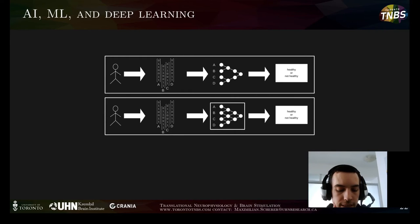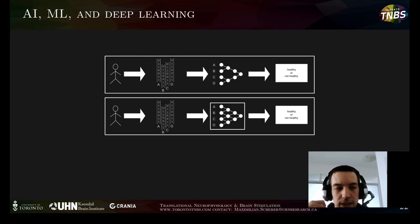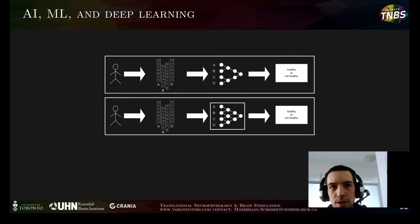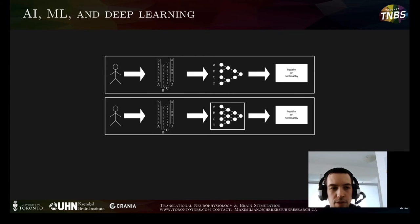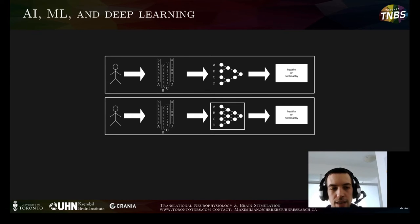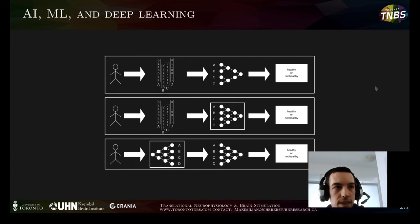A nice example: if you have an EEG from a patient with 256 channels, not all channels will be important for determining whether a patient is healthy or not. In advance you usually don't know which channels matter. You may have some idea — look at the temporal area or the motor area — but you're not a hundred percent sure. So you give this high-dimensional information to the machine hoping it finds a pattern and uses it to determine whether Steve is healthy.